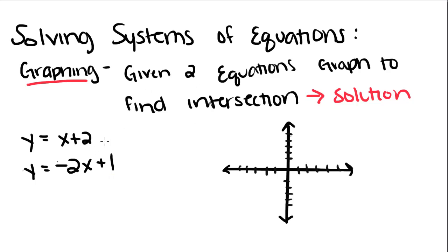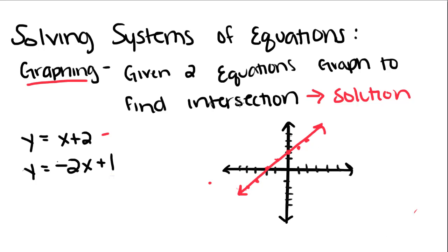First I'm going to plot the intercept of this one — positive 2 right there. And then I'm going to use my slope to find my line. I'm going to go up 1, over 1, up 1, over 1, and also down 1, over 1 in the other direction. I think that gives you a pretty good idea of your line. So then we're going to draw our line, and there's our line.